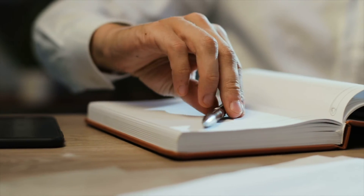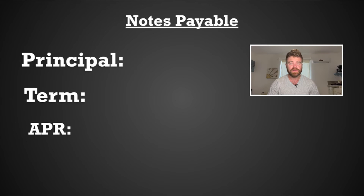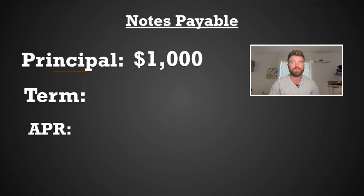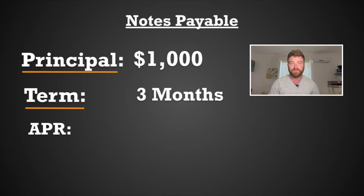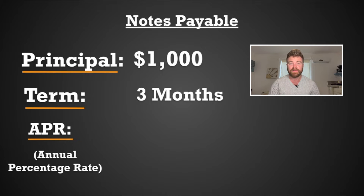You and your friend come to an agreement and write down the terms of the loan. $1,000 is the amount owed — in accounting, we call this the principal. It is the original amount that is borrowed, and this will be paid back within three months. In accounting, we call this the term of the note — the length of time it will take for the note to be paid back. And lastly, we have interest, which is another way of saying the cost of borrowing. For borrowing $1,000, your friend will be charged a little extra as interest. This is represented as an APR percentage — annual percentage rate — and in this example, APR will be 5%.